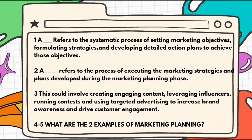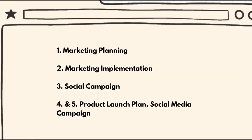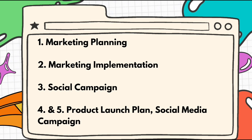Here are five pre-test questions. Number one: a blank refers to the systematic process of setting marketing objectives, formulating strategies, and developing detailed action plans to achieve those objectives. Number two: a blank refers to the process of executing the marketing strategies and plans developed during the marketing planning phase. Number three: this could involve creating engaging content, leveraging influencers, running content, and using targeted advertising to increase brand awareness and drive customer engagement. Number four to five: what are the two examples of marketing planning? The answers are: number one, marketing planning; number two, marketing implementation; number three, social media campaign; and number four and five, product launch plan and social media campaign.